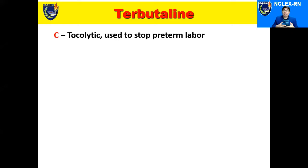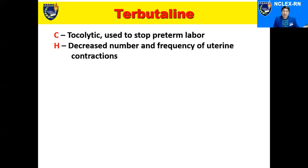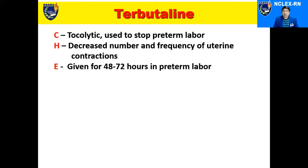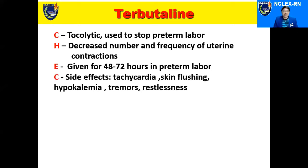Now let's talk about terbutaline. The classification: it's a tocolytic. What does it do? It promotes relaxation of the uterus, so it's used to stop preterm labor. How will we know that it's effective? There's going to be a decreased number and frequency of uterine contractions. Take note of those two parameters when we evaluate for the effects of the drug — decreased number and decreased frequency.